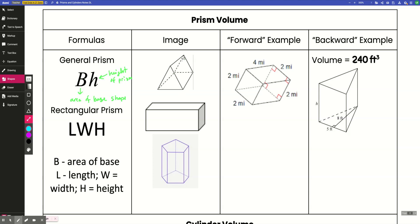So for example, in this triangular prism right here, capital B would be the area of this base shape right here, and then the height would be right here.